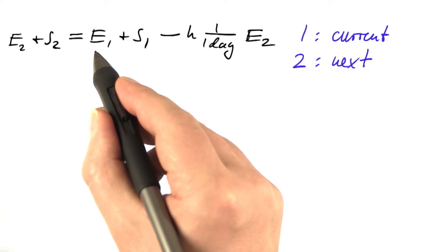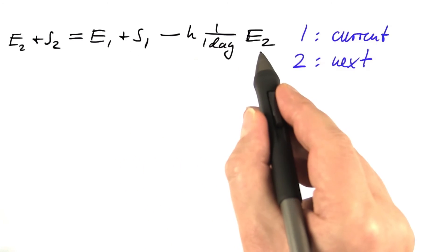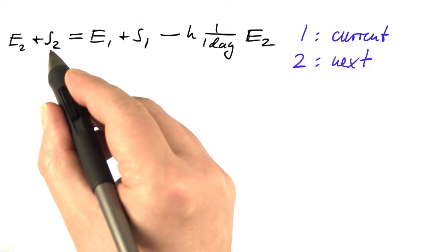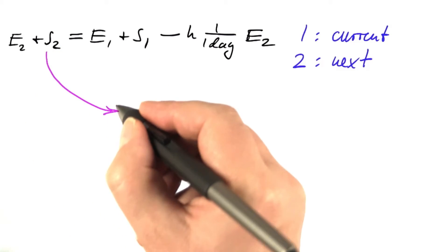e1, the current value, is known. s1, the current value is known. We want to determine e2, the next value. At this point, we do not yet know s2. But luckily enough, we derived an equation for s2 before.